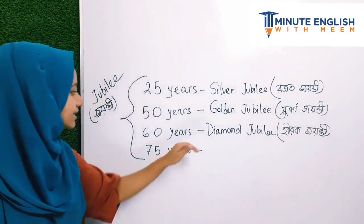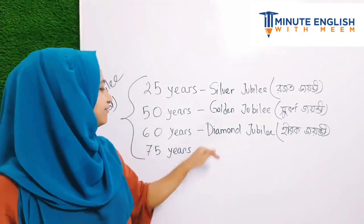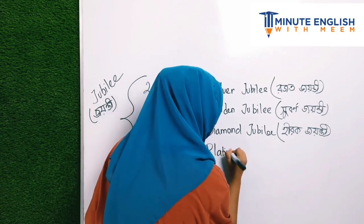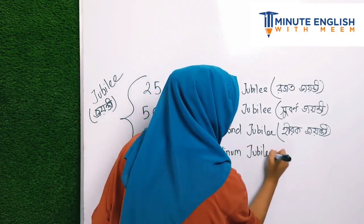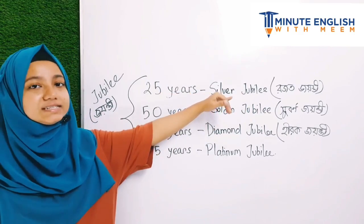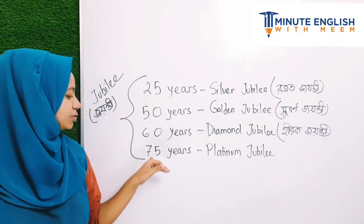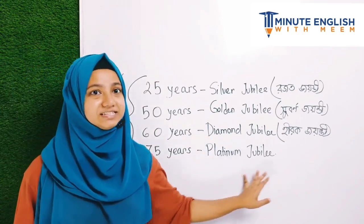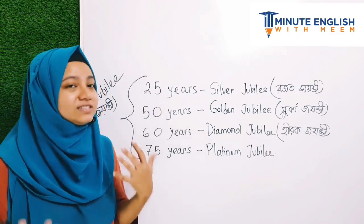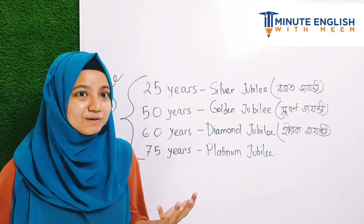And for 75 years — since platinum is considered more precious, 75 years is called 'Platinum Jubilee.' So to summarize: 25 years — Silver Jubilee, 50 years — Golden Jubilee, 60 years — Diamond Jubilee, and 75 years — Platinum Jubilee.